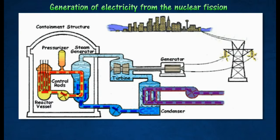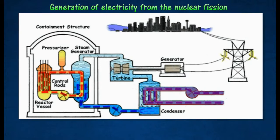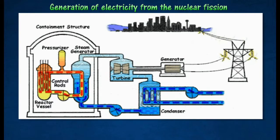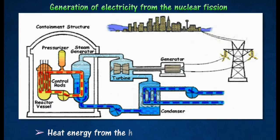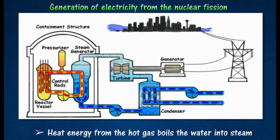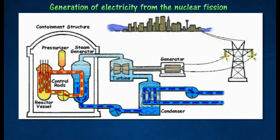Coolants normally used in a nuclear reactor are either carbon dioxide gas or heavy water. The heated coolant flows into a heat exchanger where cold water is converted into steam at very high pressure.